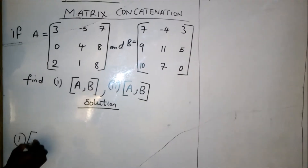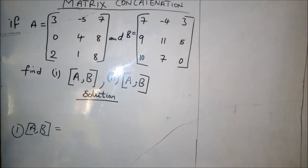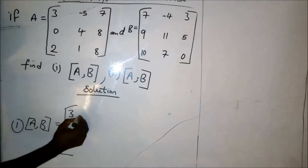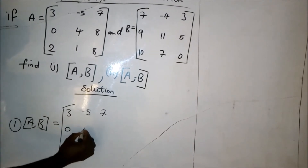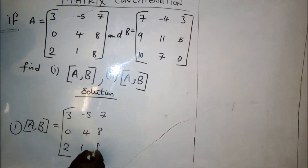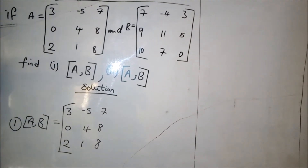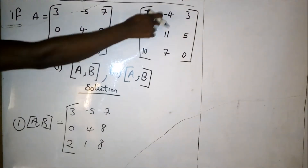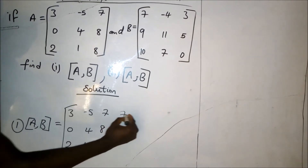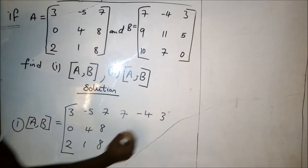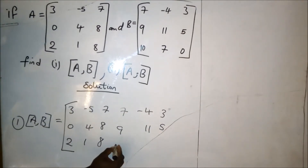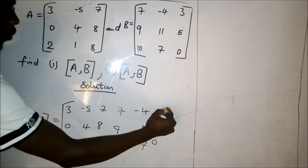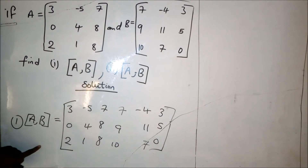For the first question, A comma B, which is the horizontal concatenation, is going to give us a matrix like this. We first write matrix A: 3, minus 5, 7, 0, 4, 8, 2, 1, and 8. Since this is horizontal concatenation, we add the second matrix just beside it. So we have 7, minus 4, 3, 9, 11, 5, 10, 7, and 0. This particular matrix is the horizontal concatenation matrix.